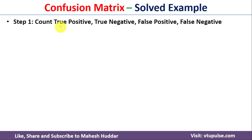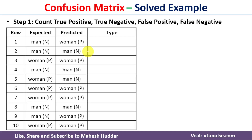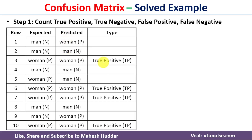Next we will find the count of true positive, true negative, false positive, and false negative. True positive means expected is women and predicted is women. We have 4 true positive cases.